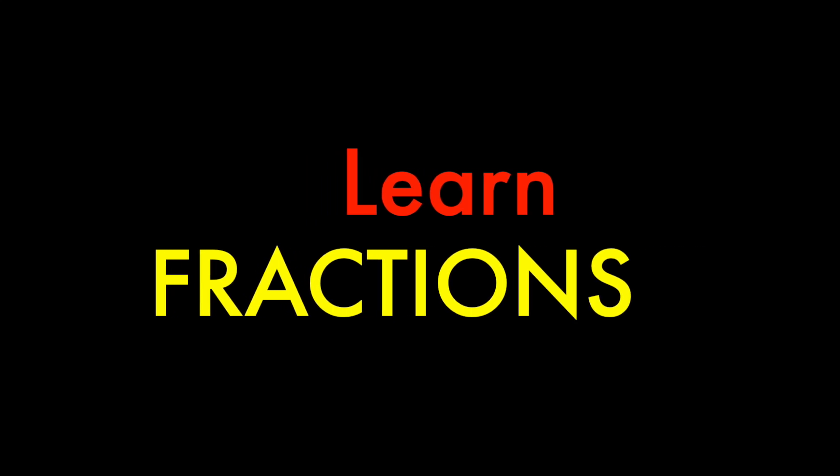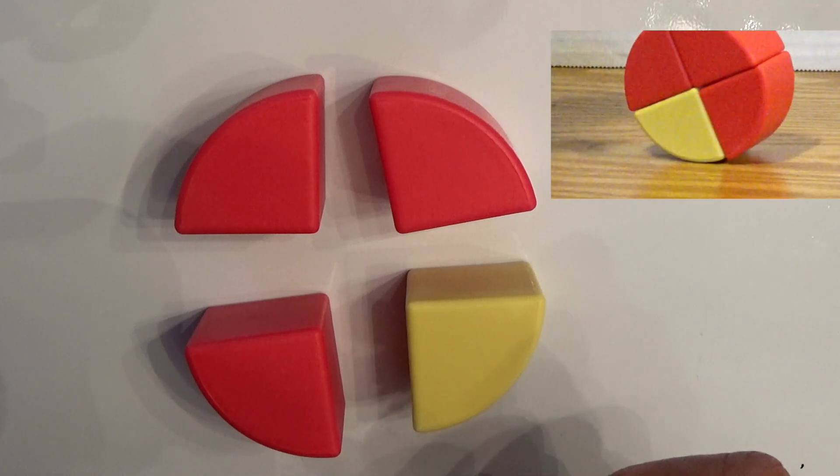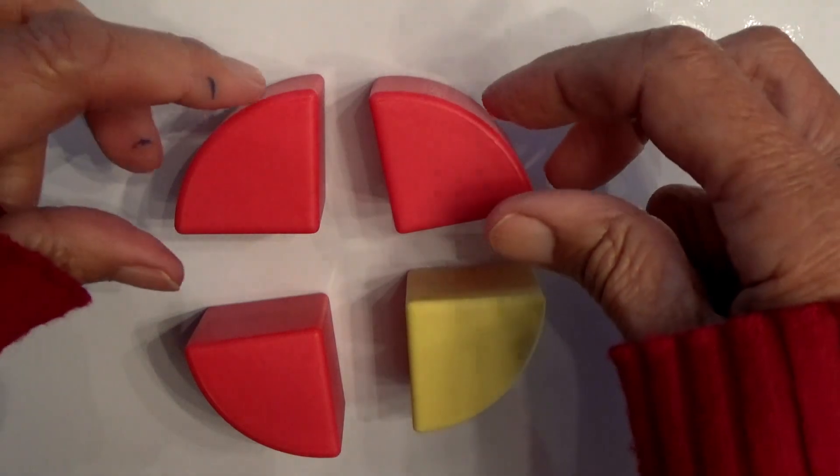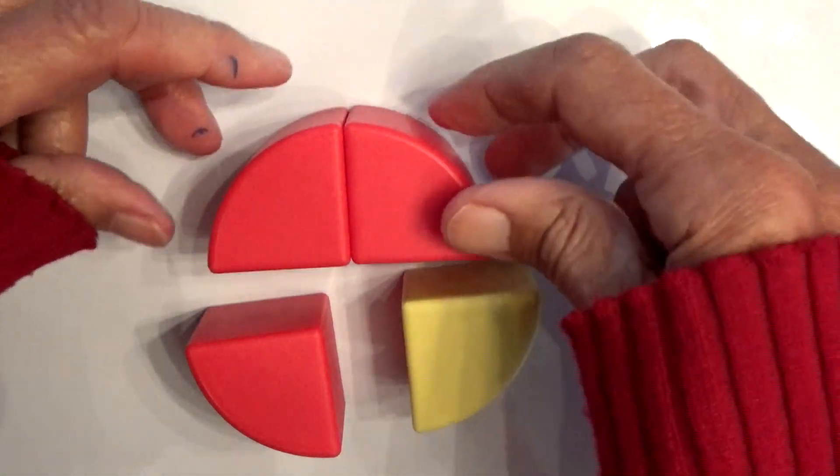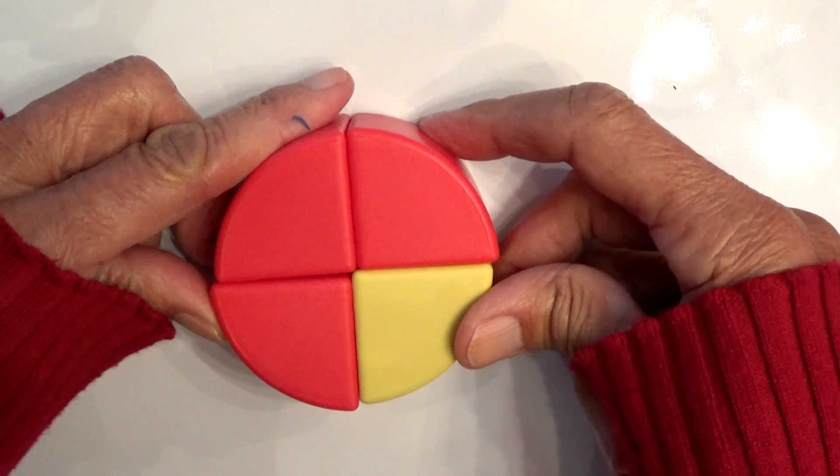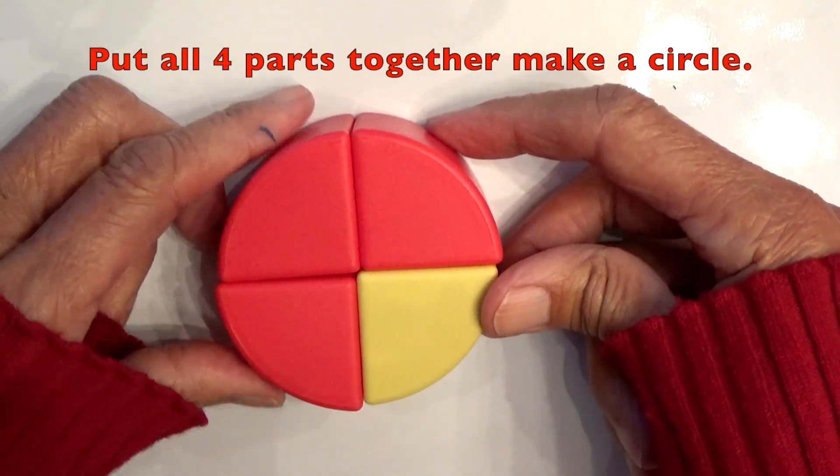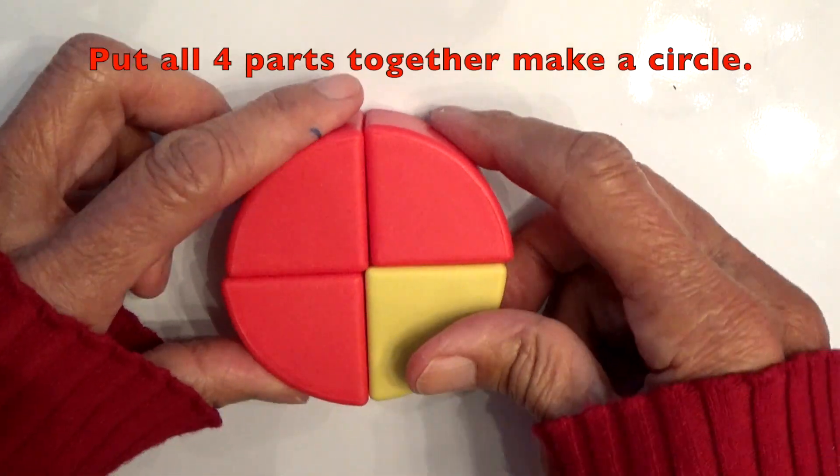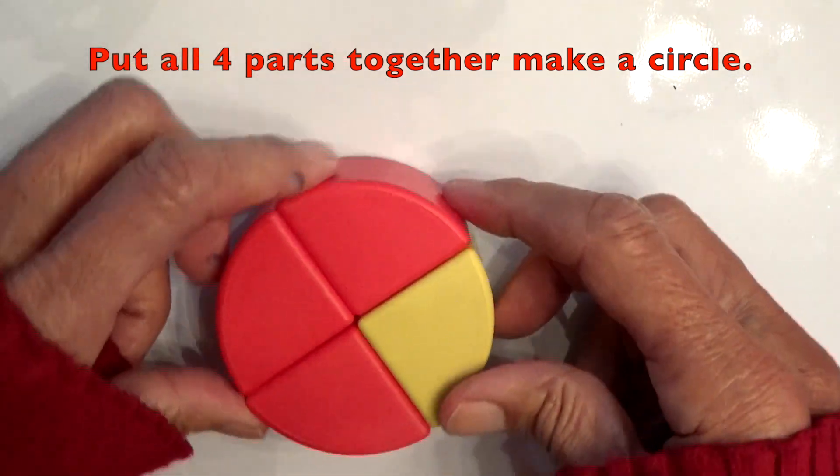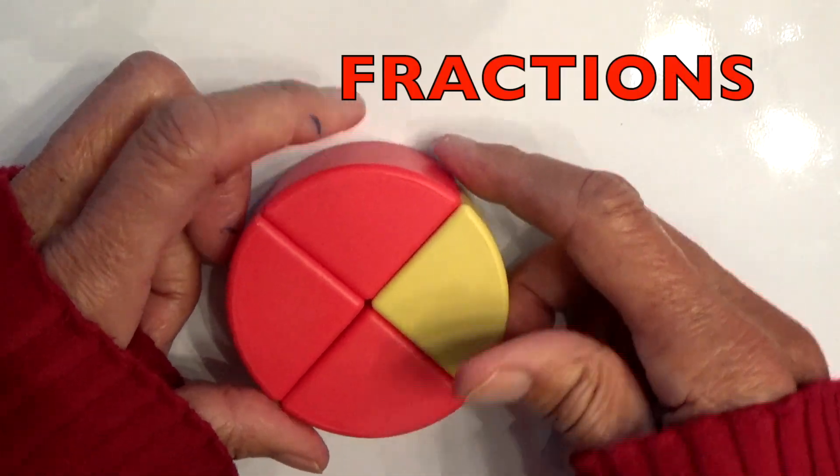Learn fractions. Remember the circle we saw earlier? Let's put these two together, oh, they snap together. Look at that, they snap together on their own. You put all four of those parts together, you have that circle. Remember, there's a circle, and here we have fractions.